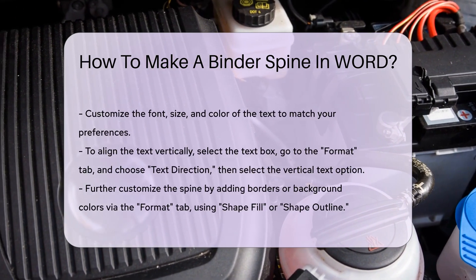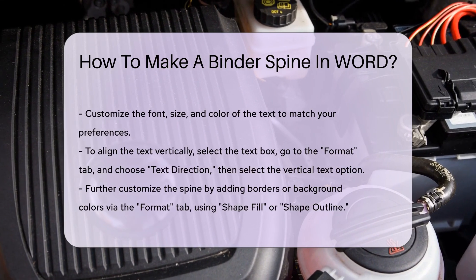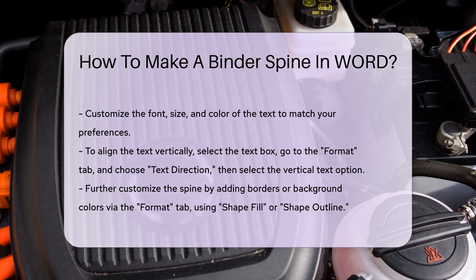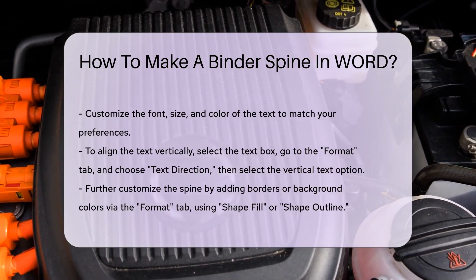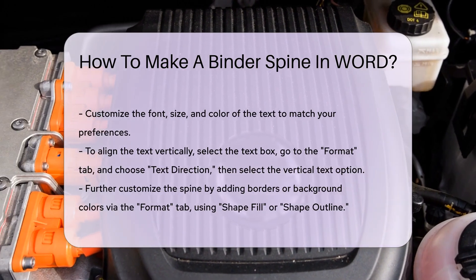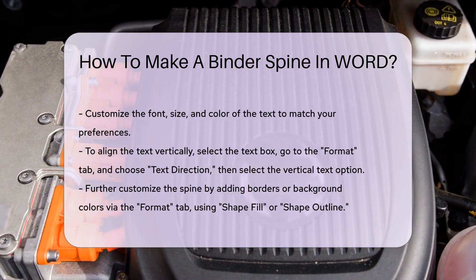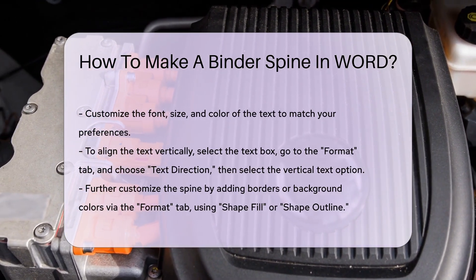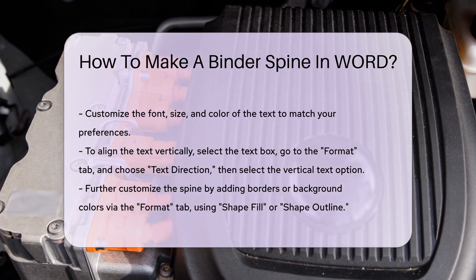To align the text vertically, select the text box and go to the Format tab. Choose Text Direction and select the Vertical Text option. This will rotate your text to fit the spine correctly.